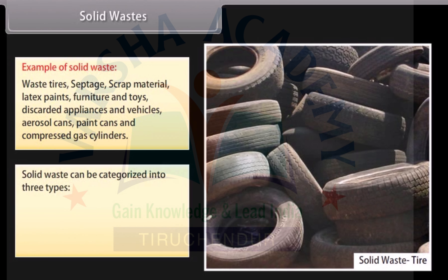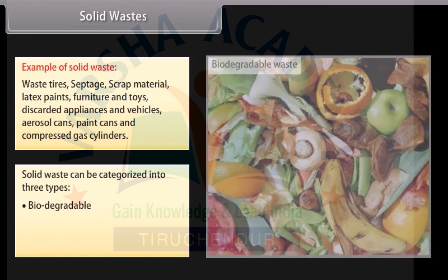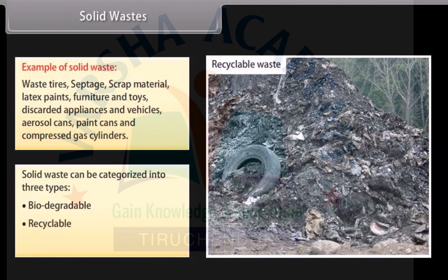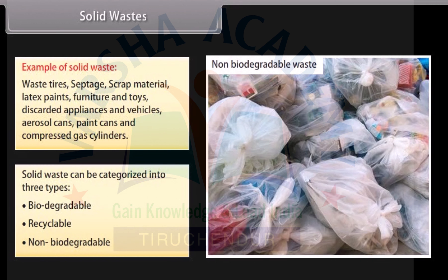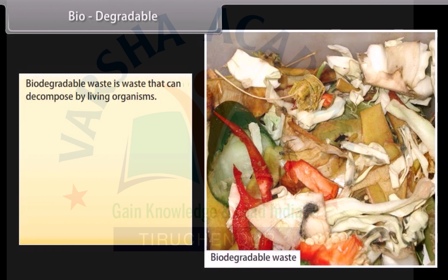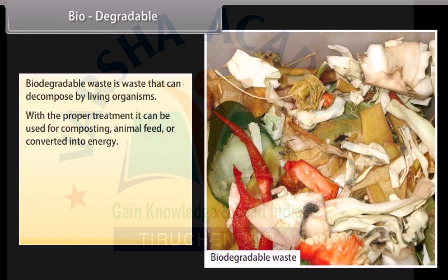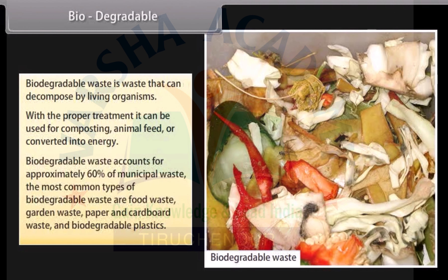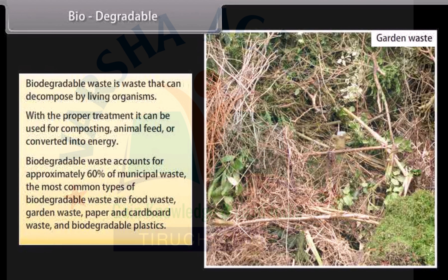Solid waste can be categorized into three types: biodegradable, recyclable, and non-biodegradable. Biodegradable waste is waste that can be decomposed by living organisms. With proper treatment it can be used for composting, animal feed, or converted into energy. Biodegradable waste accounts for approximately 60% of municipal waste. The most common types are food waste, garden waste, paper and cardboard waste, and biodegradable plastics.